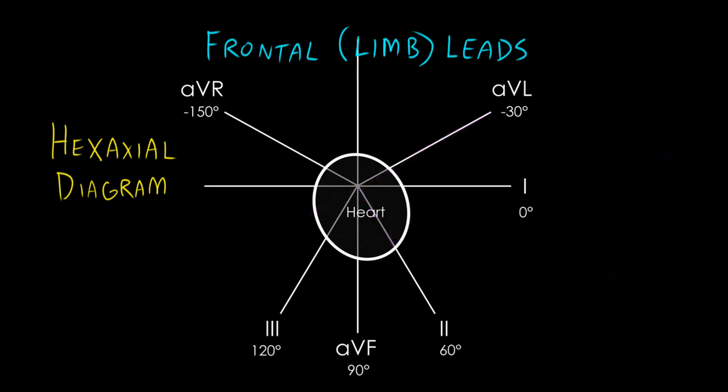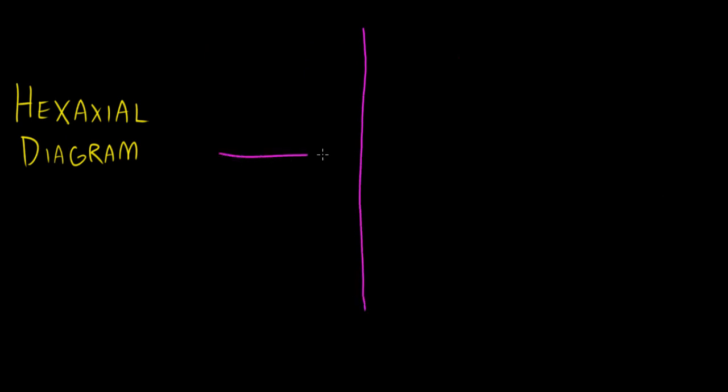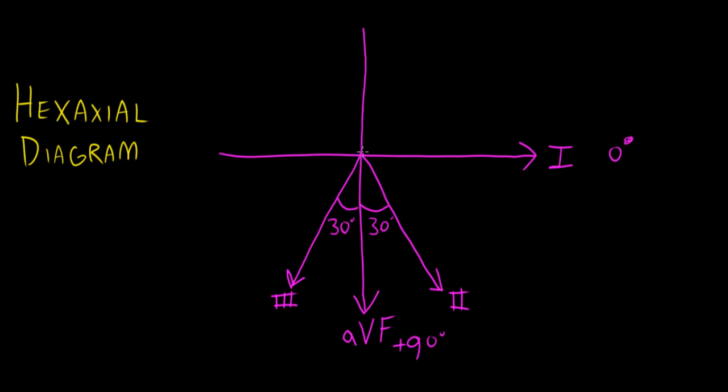Now let's remove these markings for a moment and just look at this hexaxial diagram. So in order to be able to interpret EKGs, it's important that you know the exact location of these six frontal plane leads. You should be able to reproduce this diagram from memory, kind of like this. So lead one goes over here at zero degrees. Perpendicular to it is lead AVF, which is down here at positive 90 degrees. Leads two and three come 30 degrees off of the vertical and they form mirror images of each other. Leads AVL and AVR come 30 degrees off of the horizontal and they form mirror images of each other. Now it's important to be able to memorize the location of these leads and be able to reproduce this diagram from memory so you have a good handle on things like axis.